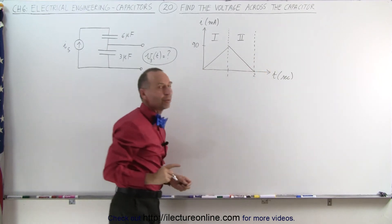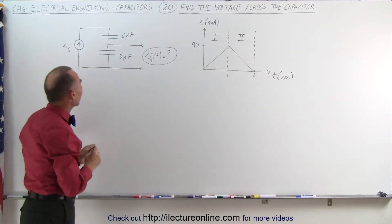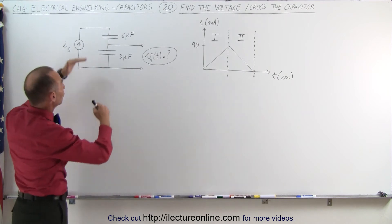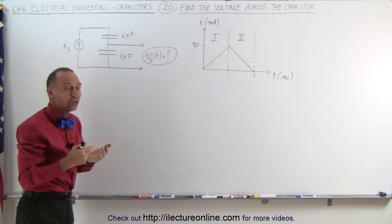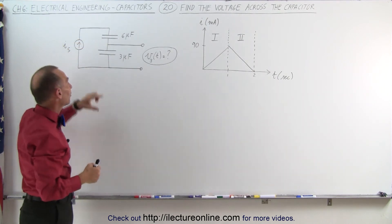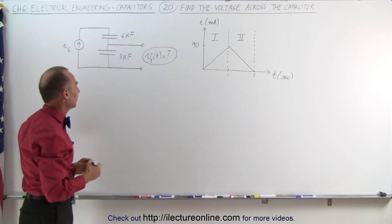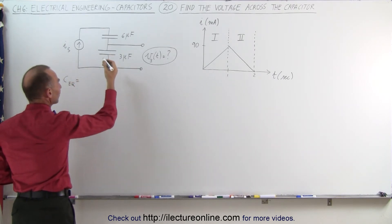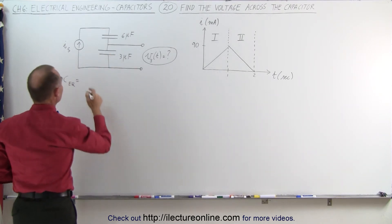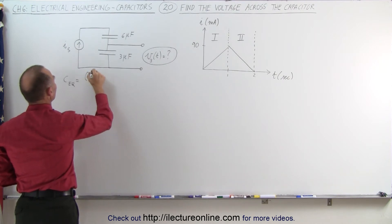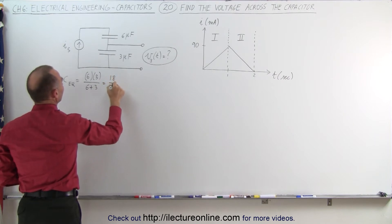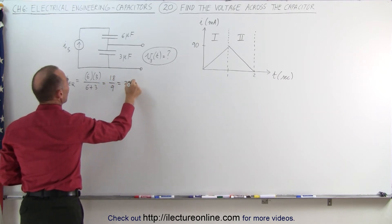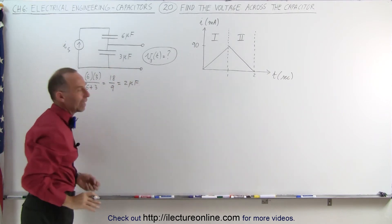But first, what we're going to do is find the equivalent capacitance because we're going to find the voltage across both capacitors and then use the voltage divider concept to find the voltage across the 3 microfarad capacitor. So the equivalent capacitance, C total or C equivalent, since they are in series, we have to use the product over the sum. It's going to be 6 times 3 divided by 6 plus 3, which is 18 divided by 9, which is 2 microfarad.